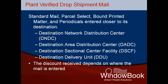PVDS is available for standard mail, parcel select, bound printed matter, and periodicals mail. The Postal Service offers significant discounts in exchange for delivering letter or flat mail direct to destination postal distribution facilities — Network Distribution Centers (NDCs), Area Distribution Centers (ADCs), Sectional Center Facilities (SCFs), and destination delivery units (DDUs). The Postal Service calls this work sharing: in exchange for reducing the Postal Service's freight costs and processing time, postal customers can achieve postage discounts. The Postal Service has 29 NDCs and approximately 400 Sectional Center Facilities across the U.S., although this number is being reduced with the network optimization plan the Postal Service has been discussing.